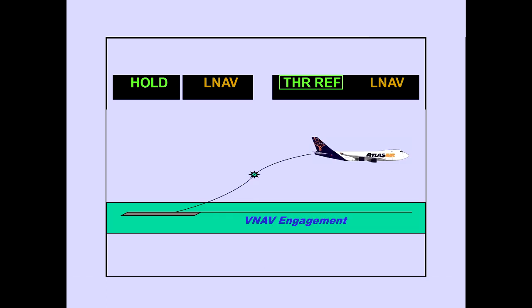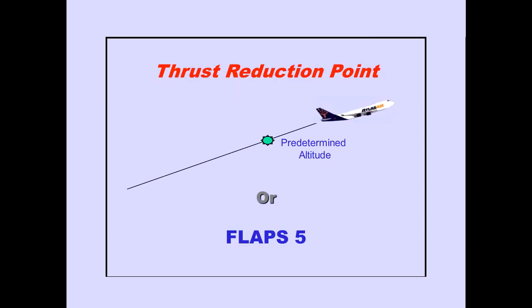Hold remains engaged during takeoff until VNAV engagement. At this point, the autothrottle mode becomes thrust reference. At the thrust reduction point, the thrust limit changes to the selected climb thrust limit. The thrust reduction point can be defined as either a predetermined altitude or the selection of flaps 5. The thrust reduction point is entered in the FMS-CDU during preflight and will be discussed in the FMS-Preflight module.